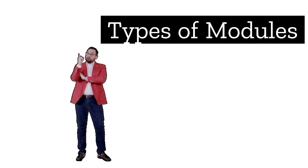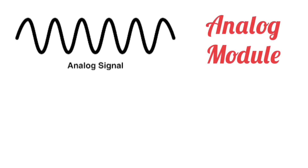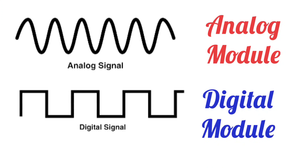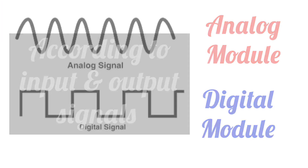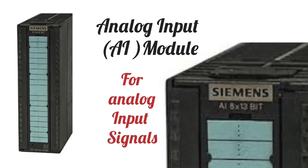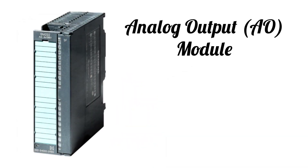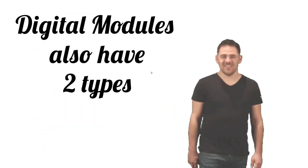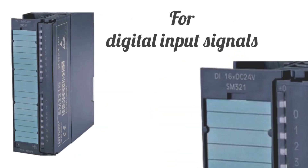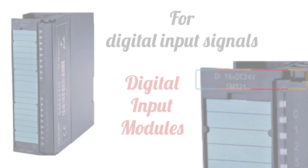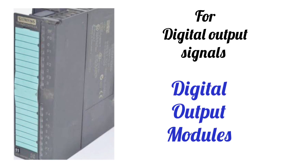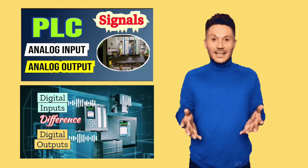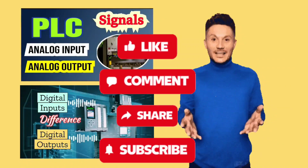If we understand their types, modules are categorized according to signals. For analog signals there are analog modules, and for digital signals there are digital modules. These are further categorized by input and output: analog input module for analog input signals, analog output module for analog output signals. Similarly, there are two types of digital modules: digital input modules for digital input signals, and digital output modules for digital output signals. If you want to understand all these signals, watch the related videos to learn about all PLC signals.